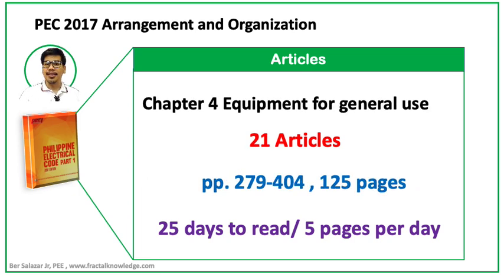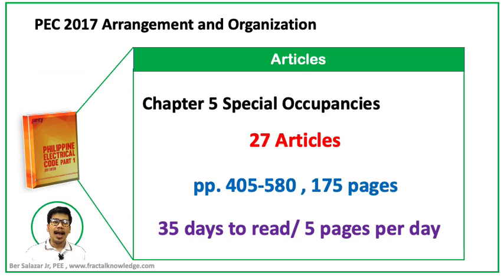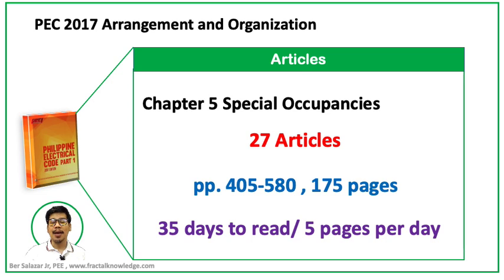Chapter 4 is dedicated to equipment for general use: 21 articles, pages 279 to 404 — almost 125 pages, taking 25 days at 5 pages per day. Chapter 5 is dedicated to special occupancies: 27 articles, pages 405 to 580 — almost 175 pages, taking 35 days at 5 pages per day.